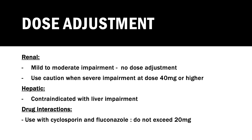Dosage adjustment for patients with renal and hepatic impairment: for renal failure with mild to moderate impairment, there are no dose adjustments needed. However, if the patient is experiencing severe impairment, it is recommended to use the 40mg tablet or higher with caution. For patients with hepatic impairment, it is contraindicated to use this medication.